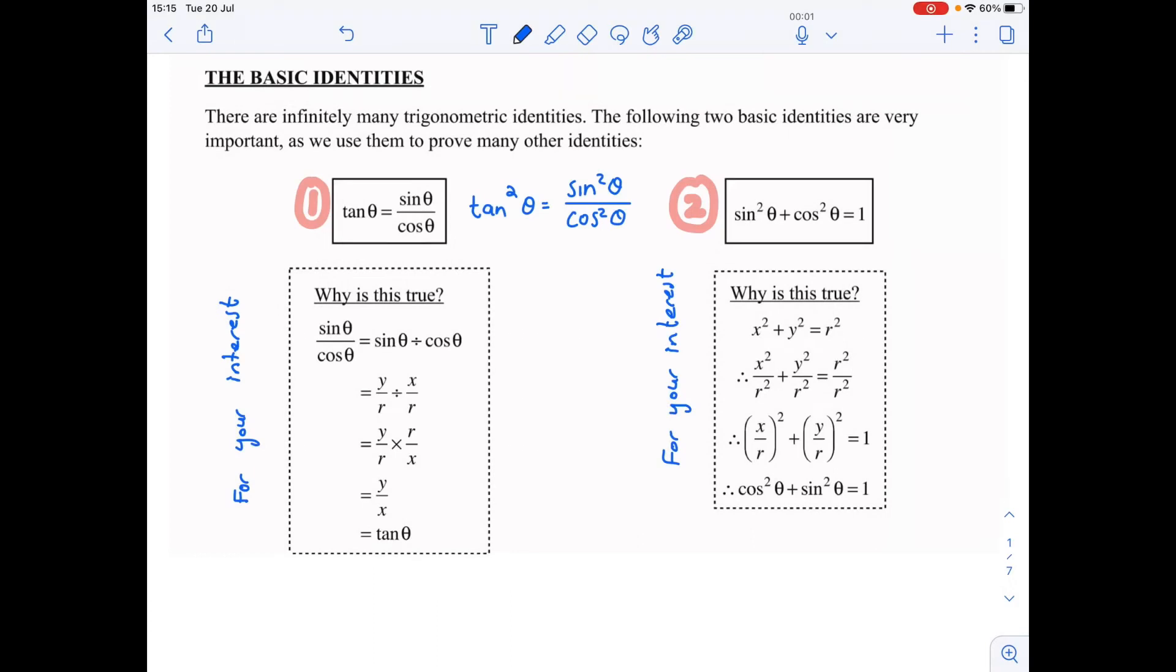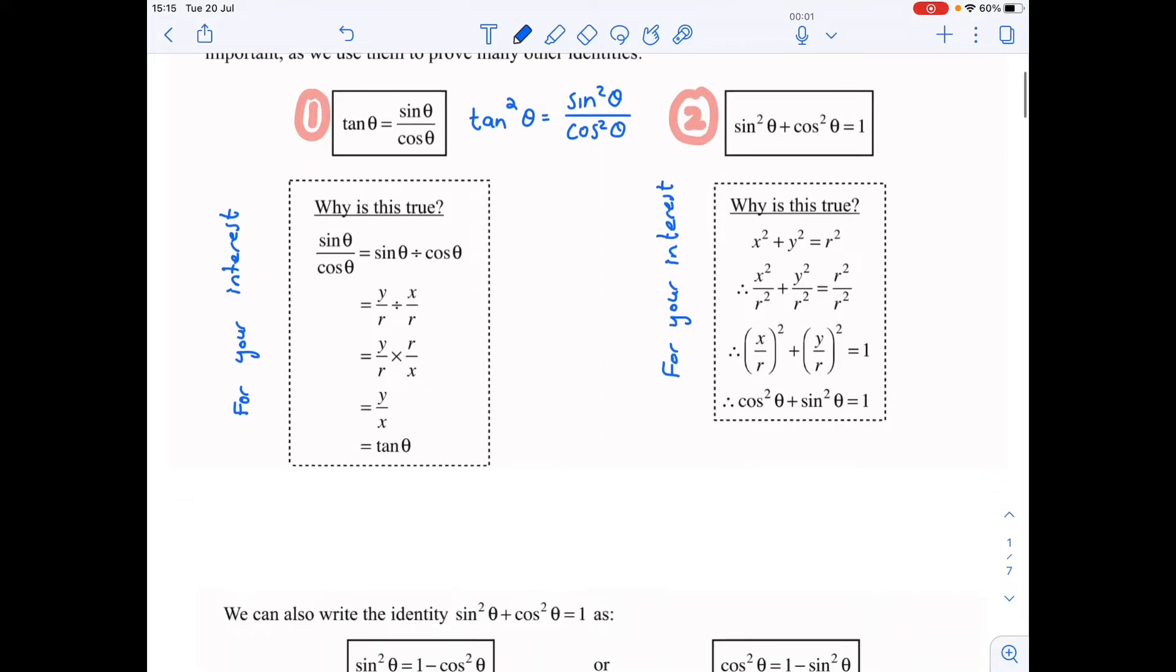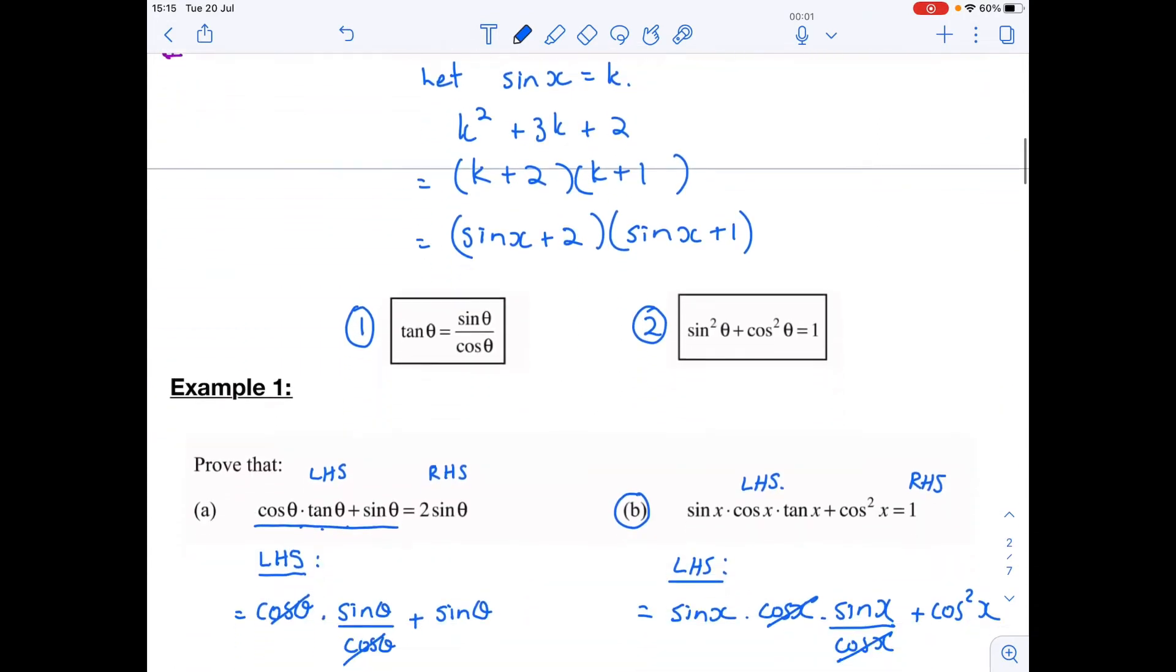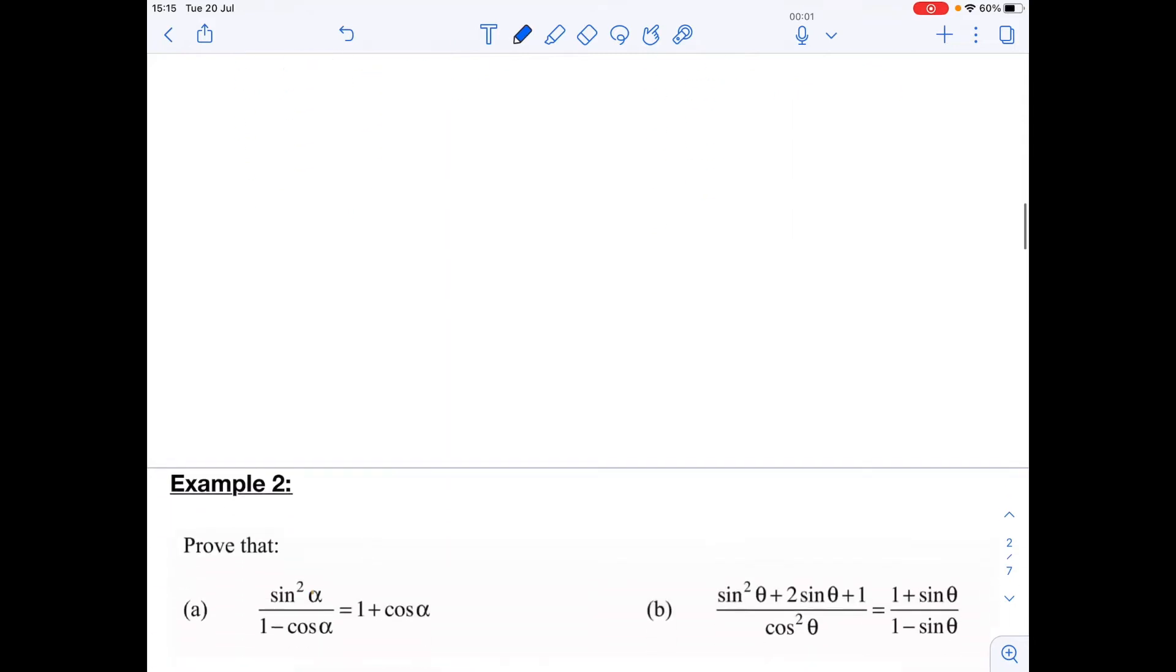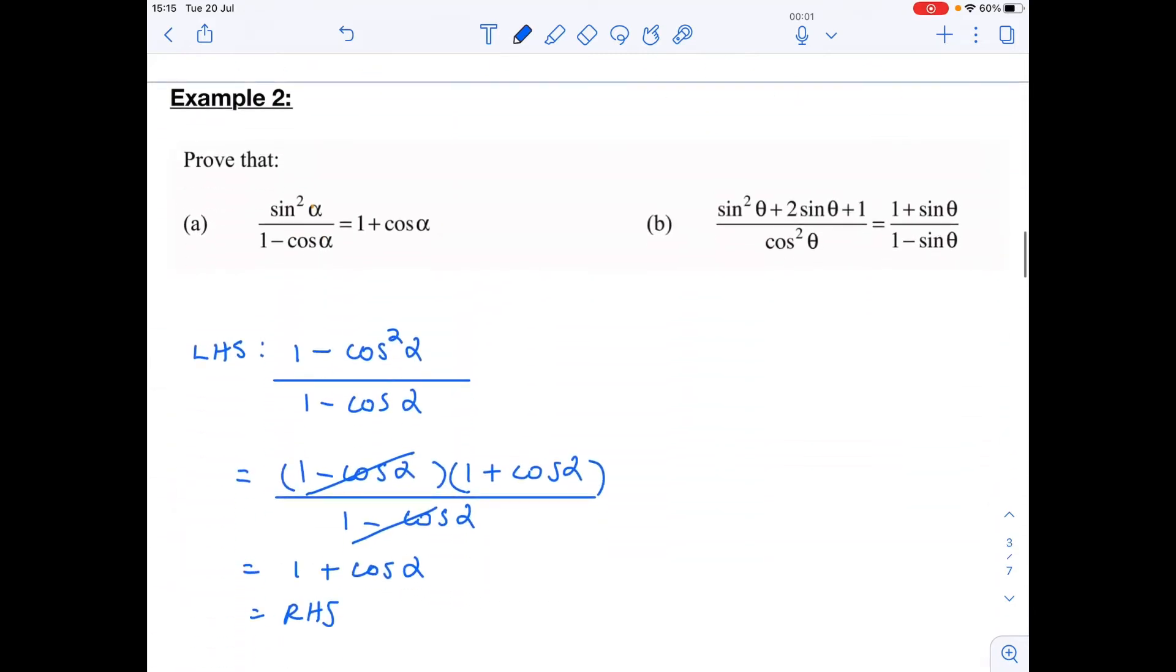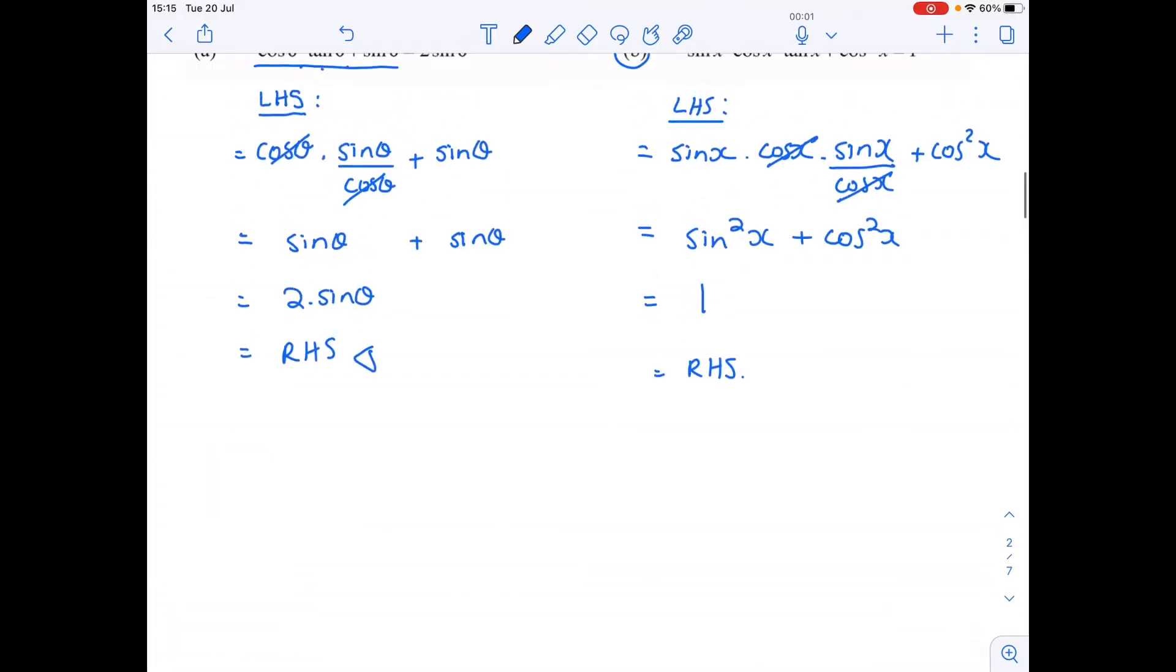Hello grade 11, we continue today with identities part 2. Just to recap yesterday, we did the two basic identities: tan theta equals sine theta over cos theta, and sine squared theta plus cos squared theta equals one. We did example one and example two.